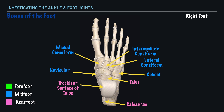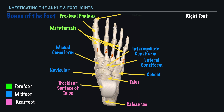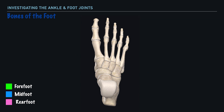Moving to the forefoot, we have our metatarsals, numbered 1 through 5 beginning with the medial aspect — metatarsals 1, 2, 3, 4, and 5. Starting with the great toe, we have what's called the proximal phalanx, followed by the distal phalanx. For toes 2 through 5, we have proximal, middle, and distal phalanges.